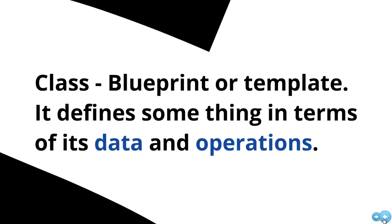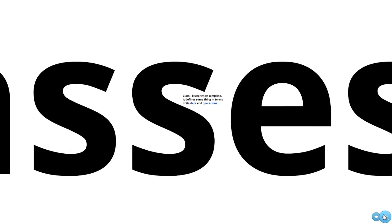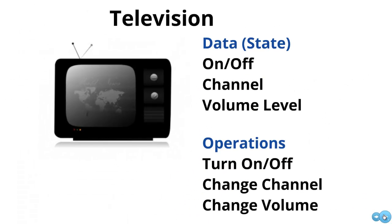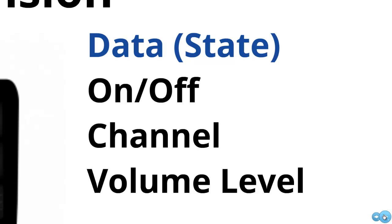Let's look at some examples to clarify these ideas. For our first example, we're going to model a television. A television has a lot of data or state information associated with it. We can ask: is this television on or off? What channel is it on? What's the volume level? All of these things — the on, the off, the channel, the volume level — would be the data or state information associated with the television.